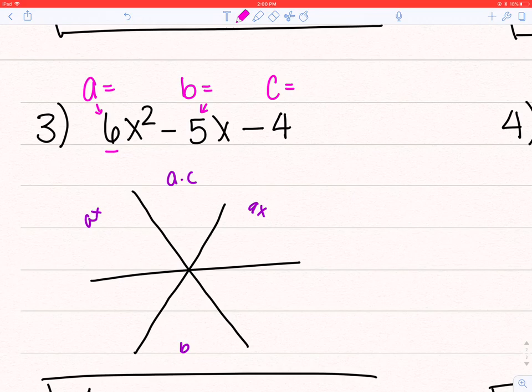Write out my a, b, and c. So I have a equals 6, b is negative 5, and c is negative 4.